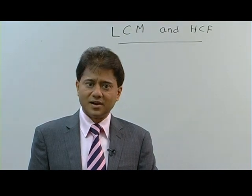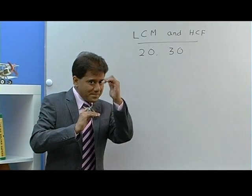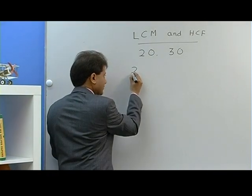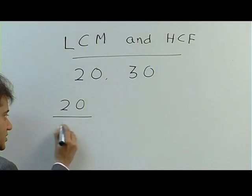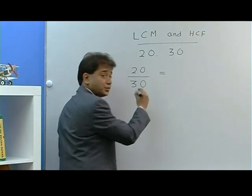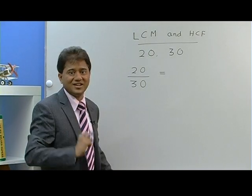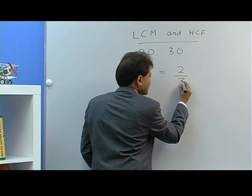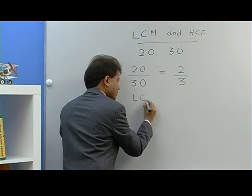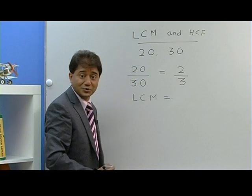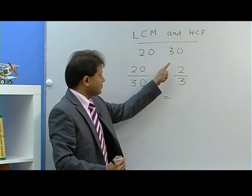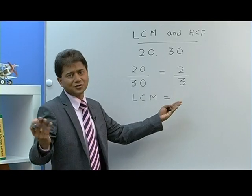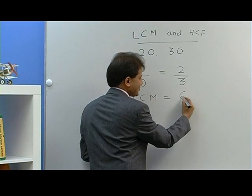Let's take another example: 20 and 30. You write these numbers in the form of numerator and denominator, like this: 20 over 30. Now you have to reduce it to the lowest term. 20 over 30 reduces to 2 over 3. For finding LCM, you cross multiply: 30 times 2 is 60. Or 20 times 3, which is also 60. And this is your answer.